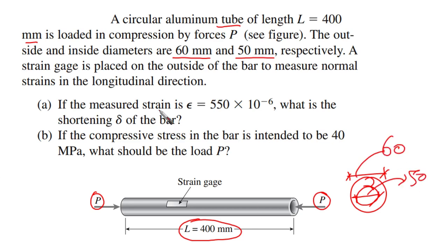A strain gauge is placed on the outside of the bar to measure normal strains in the longitudinal direction. We are having a strain gauge attached to this tube, and this is a common practice whenever we are recording or trying to measure strains in similar tubes. We attach strain gauges from the outside and try to find or measure the strain being developed in this element or tube under different loading conditions.